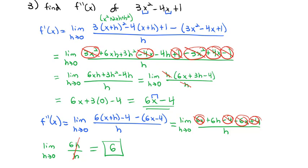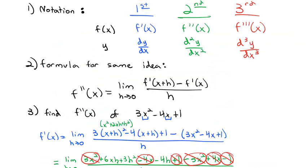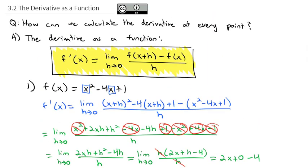If we wanted the third derivative, we'd just run through the formula again. The key takeaway from today's lesson is that the formula for the derivative as a function is the limit as h goes to 0 of f of x plus h minus f of x, all over h. Practice a few and we'll take a look at it more in class.